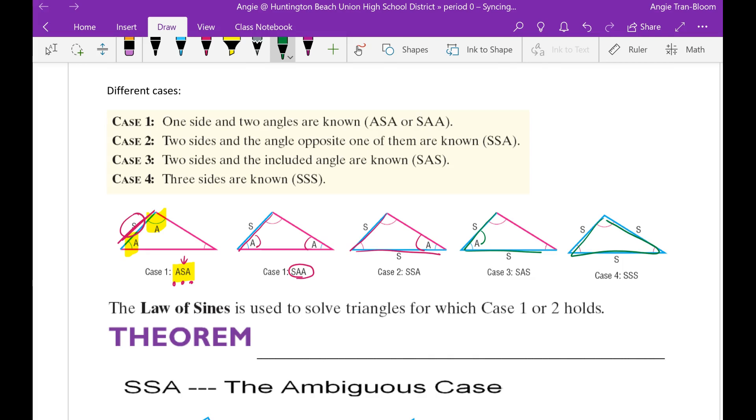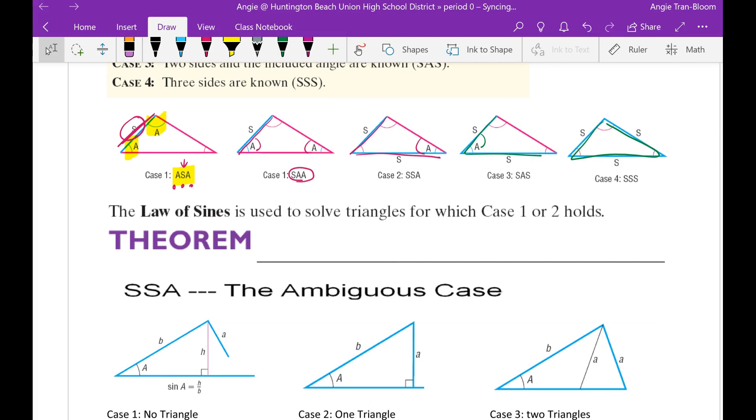So, the theorem, the Law of Sines is used to solve triangles for which case one or two holds. Then we'll talk about case three and four in a little bit. So the Law of Sines states, sine of angle A over leg A is exactly the same as sine of angle B over leg B, which is equivalent to the ratio of sine of angle C to leg C. So this is what it is called the Law of Sines.